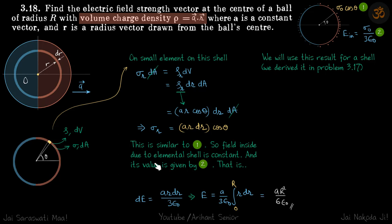So field inside due to elemental shell is constant. And its value is given by 2. That is dE. So again dE is because of the shell. This elemental shell is equal to a r dr by 3 epsilon, sigma not by 3 epsilon total field.